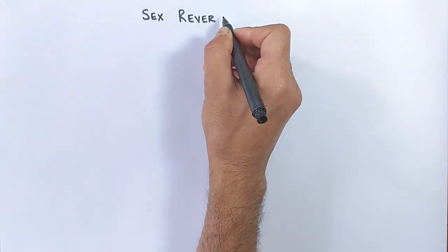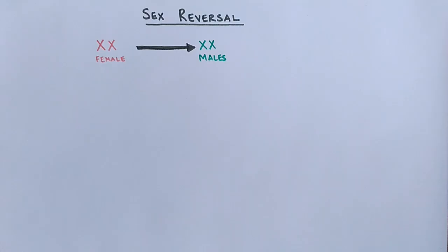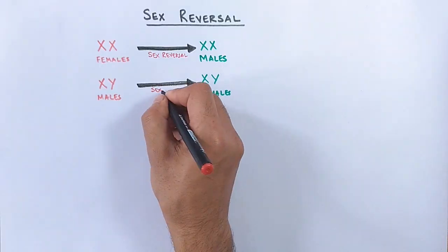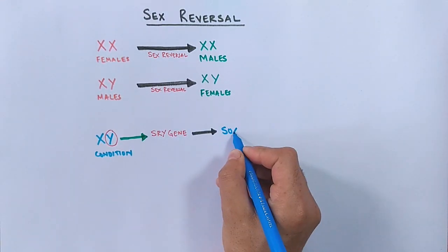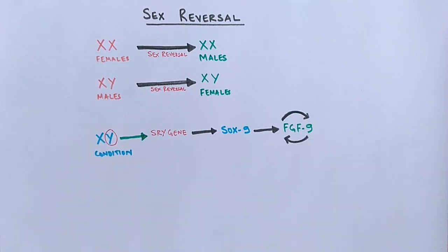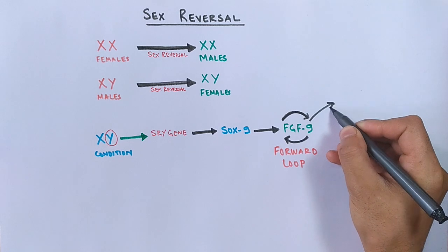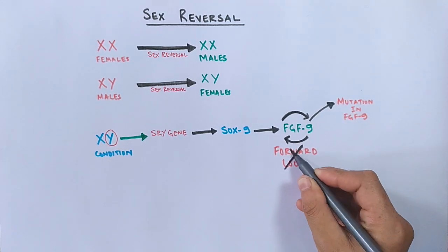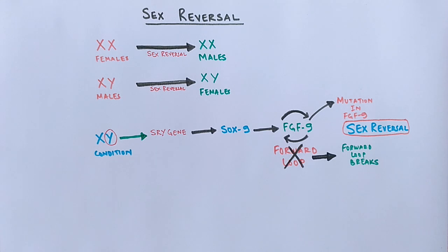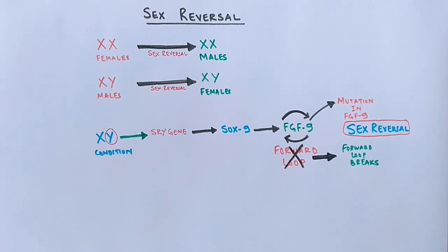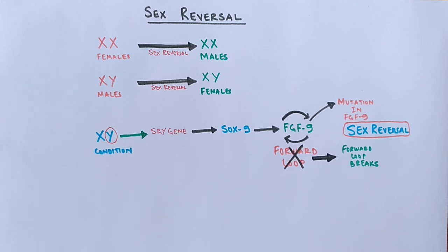There is also the phenomenon of sex reversal, where XX individuals can turn into males and XY into females. In the XY condition, if the FGF9 gene is mutated or its positive feedback loop breaks, sex reversal occurs — the XY individual develops as female, because genes from the single X chromosome begin to show expression. Similarly, a mutation in the SRY gene automatically leads to expression of X chromosome genes, resulting in differentiation into ovaries.